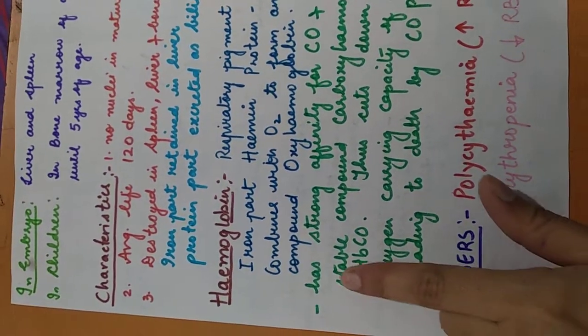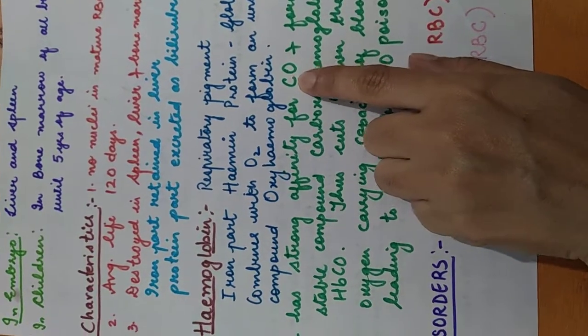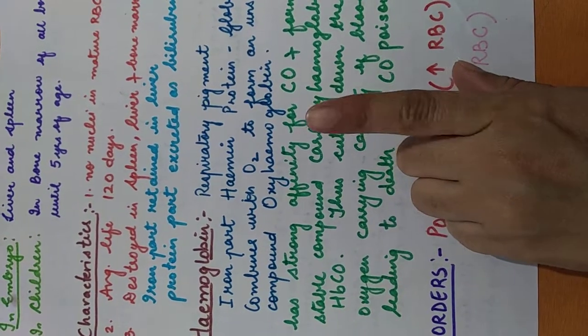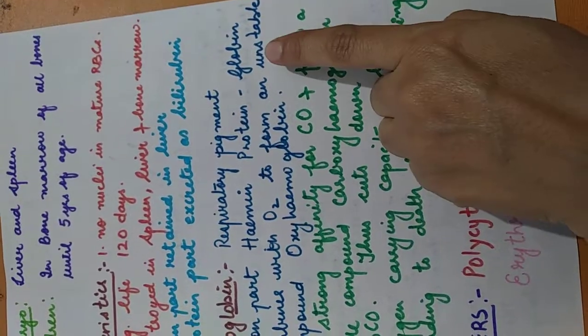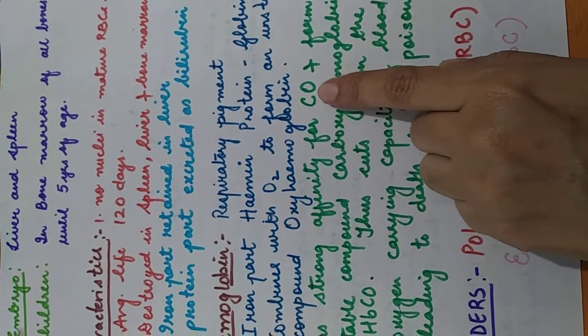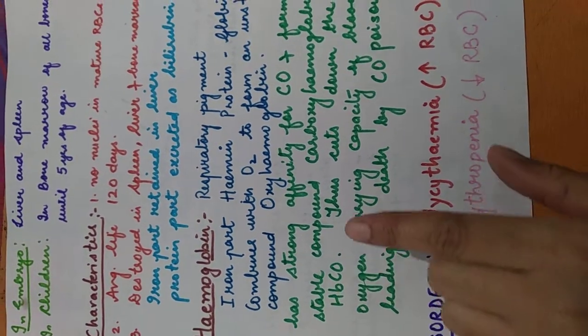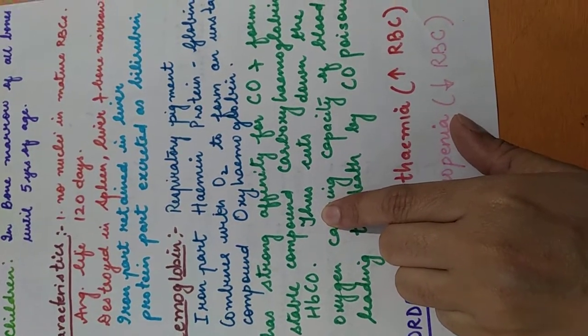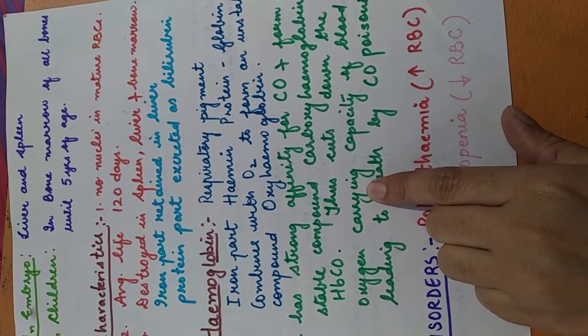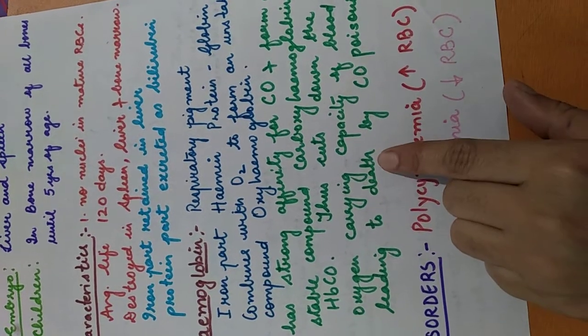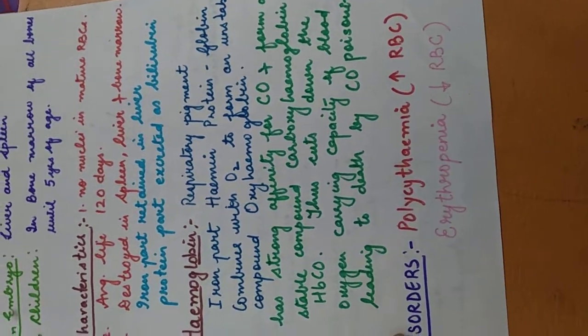Now, this hemoglobin has a very strong affinity with carbon monoxide, and with this it forms a stable compound, which is known as carboxyhemoglobin. See, when it combines with oxygen, it forms an unstable compound. But with carbon monoxide, it forms a stable compound, carboxyhemoglobin. What happens when this carboxyhemoglobin compound is formed? This cuts down the oxygen-carrying capacity of blood, leading to death by carbon monoxide poisoning. You have read this in your junior classes also.